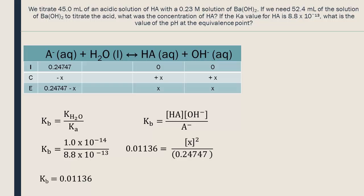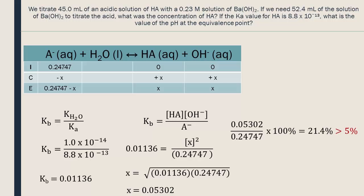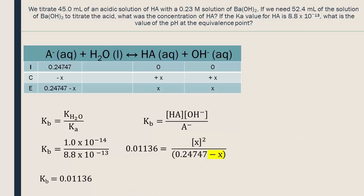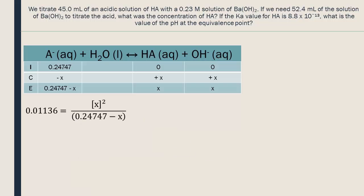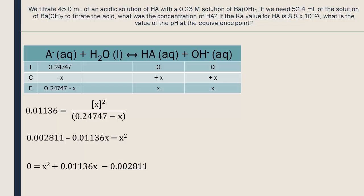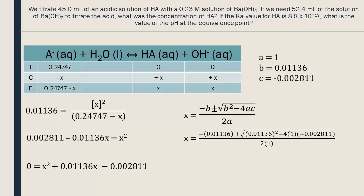Let's check if we can use the 5% rule. No — our change value is not less than 5%, so we will need to take the subtraction into consideration and use the quadratic equation. We need to put all the terms onto one side, then put our values into the quadratic equation. A negative concentration of OH⁻ is impossible, so we ignore that answer. The concentration of OH⁻ is 0.04764 moles per liter.